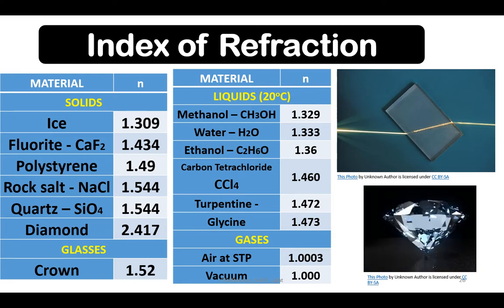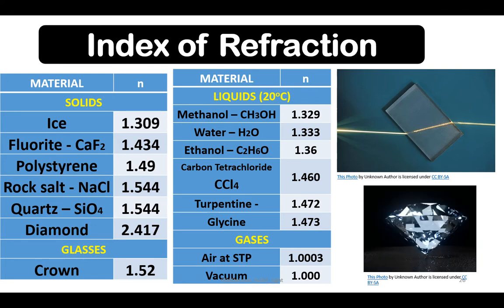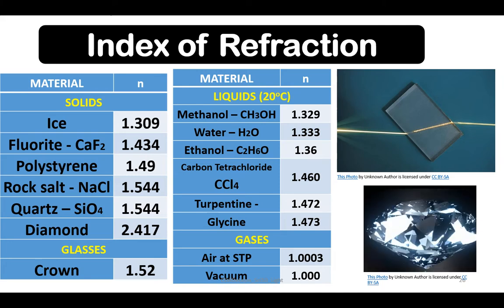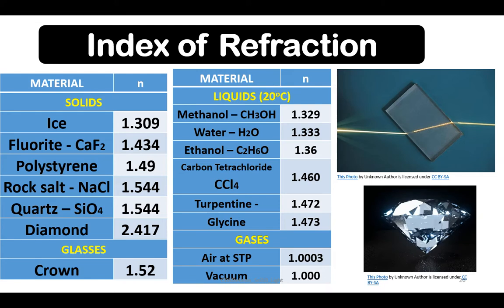And glycine, which has a single hydrogen atom and is an example of the simplest amino acid, has Index of Refraction of 1.473.